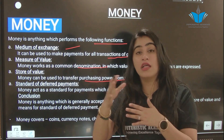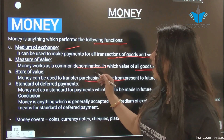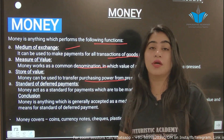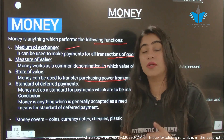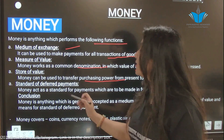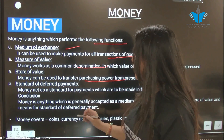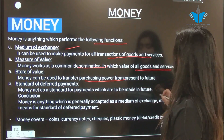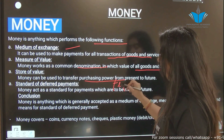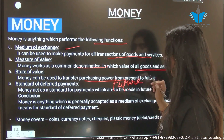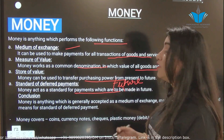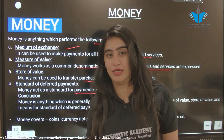Money can be used to transfer purchasing power from the present to the future — that is the store of value function. Next is standard of deferred payment. Deferred payment means future payment. Money acts as a standard of deferred payments which are to be made in the future.